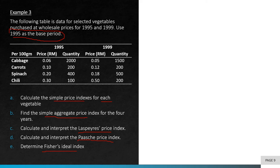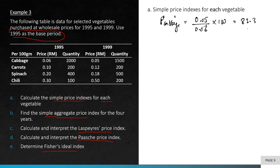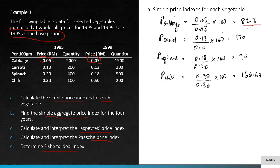For part A, the simple price index for each vegetable uses PT over PO times 100. For cabbage: 0.05 over 0.06 times 100 equals 83.3. The answers for the remaining vegetables are: 120 for carrots, 90 for spinach, and 166.67 for chili.